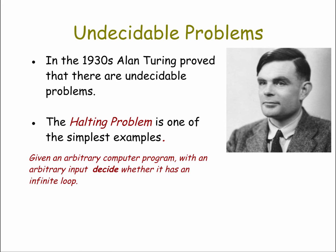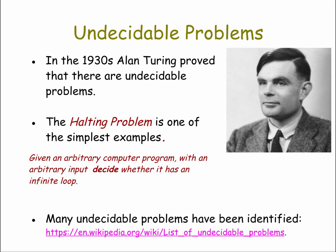The proof focused on a problem that's very easy to state — the so-called halting problem. Given an arbitrary computer program with an arbitrary input, decide whether or not it has an infinite loop. This problem can be solved for certain small programs, such as the ones we've been writing, but in general there is no way to solve it for any program and any inputs. That's what Turing proved. It was quite a revelation at the time, because it had been thought that algorithms could solve any problem. Computer scientists have since identified many undecidable problems, and you can look at the Wikipedia page to see a list of them.